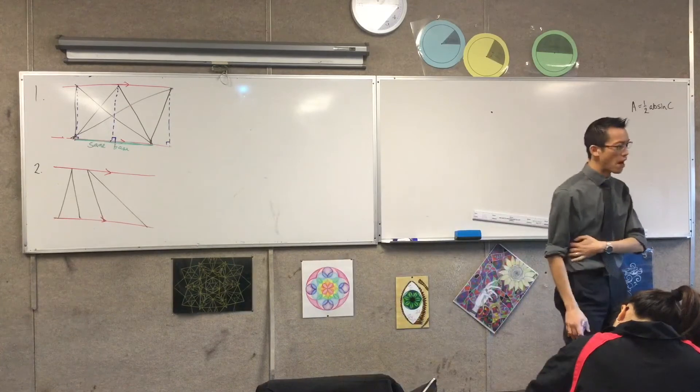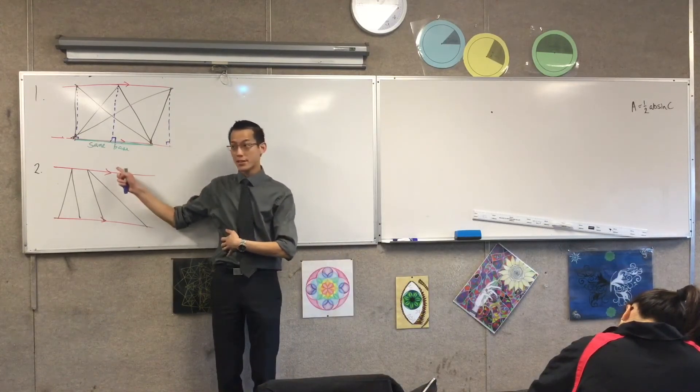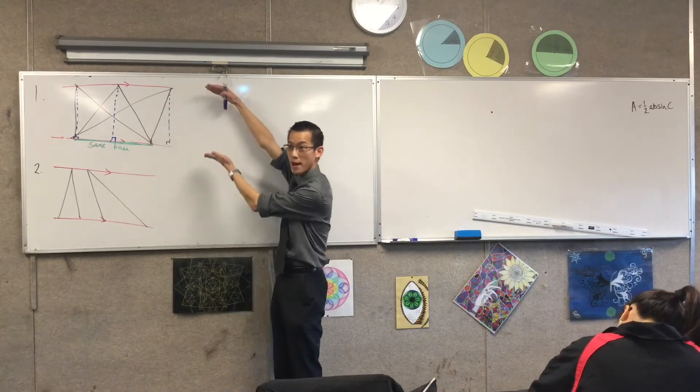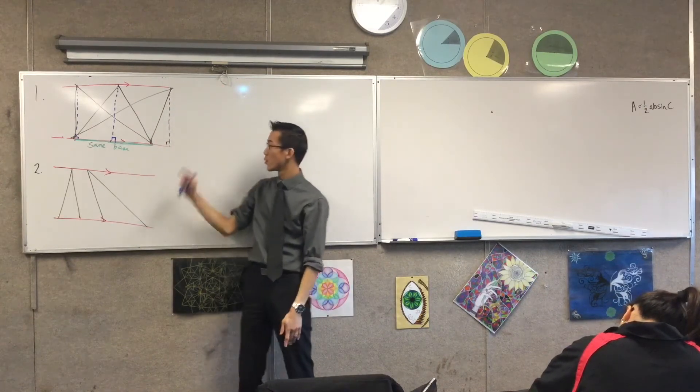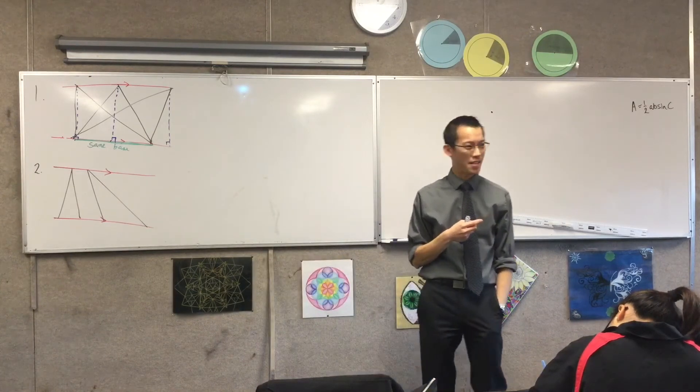Now, unlike in our first case, where you've got triangles on the same base and between the parallel lines, so therefore they're all the same, they're all the same, you can clearly see these two triangles are not the same, are they? They're not the same.